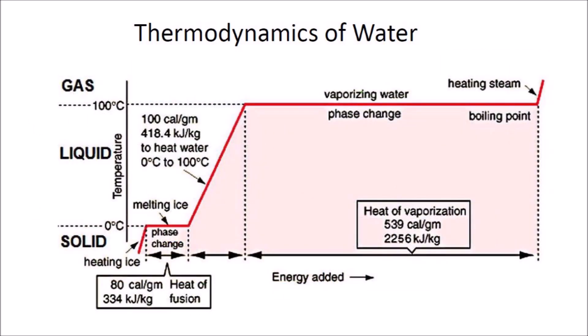This graph summarizes the energy requirements for the phase transitions of water. 80 calories per gram are required to change water from a solid to a liquid. This energy just melts the ice without raising the temperature. It is called the heat of fusion. Increasing the temperature of water from 0 degrees Celsius to 100 degrees Celsius requires 100 calories per gram. This is basically what you do on your stove when you boil water for your pasta. Changing liquid water into steam requires 539 calories per gram. This is called the heat of vaporization.